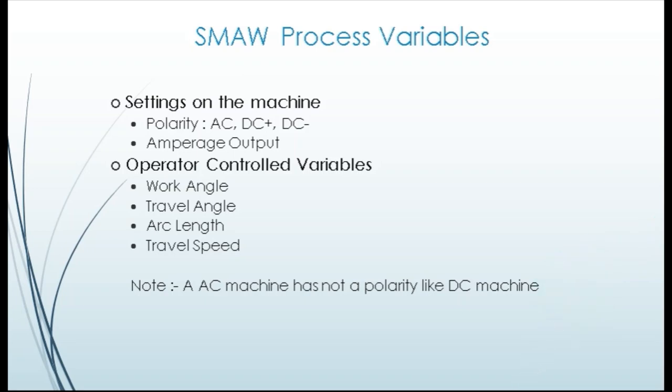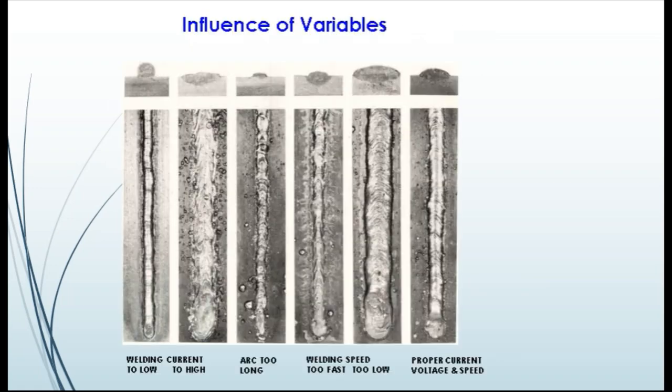Now let's understand the SMAW process variables. Variables are classified in two types. First are welding machine variables: 1. polarity — either DCEP or DCEN, and 2. current in amperes. Second are variables controlled by the welder: 1. work angle, 2. travel angle, 3. arc length, and 4. travel speed. Note that AC machines do not have polarity like DC machines.